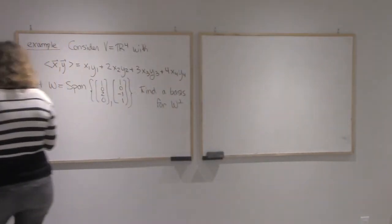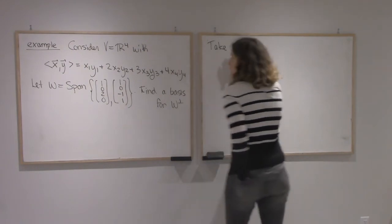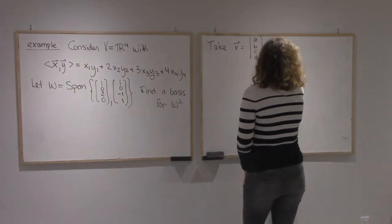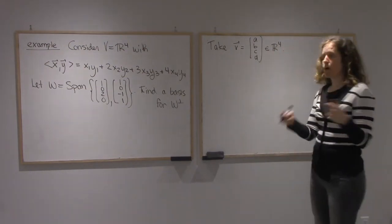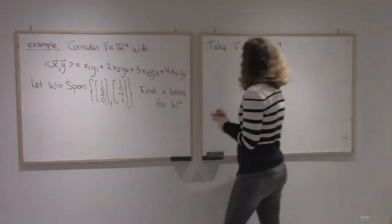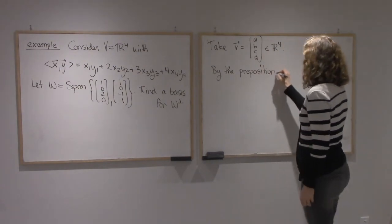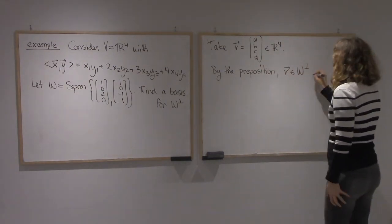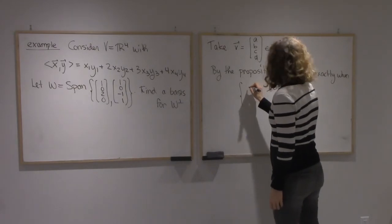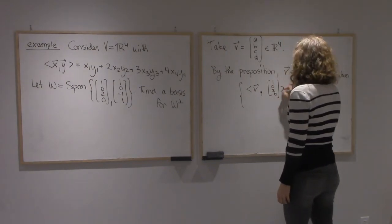I'm going to start by using the proposition. Let me take V = (A, B, C, D) in R4. From the proposition we looked at two videos ago, we know that V will be in W-perp if it's perpendicular to the two generating vectors. So by the proposition, V is in W-perp exactly when the inner product of V with (1, 0, 2, 0) equals 0.